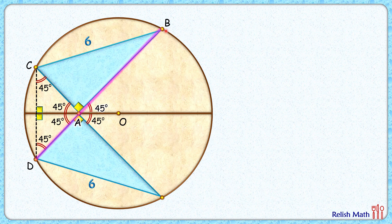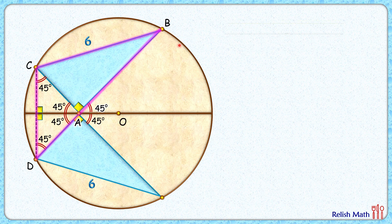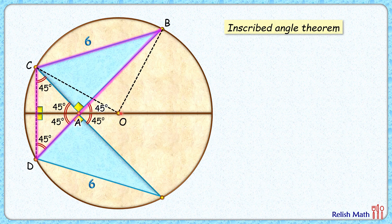Now with respect to this brown circle BC is a chord which is sustaining angle of 45 degrees at the circumference. So by inscribed angle theorem it will sustain twice of this angle at the center. So angle at the center will be 90 degrees.